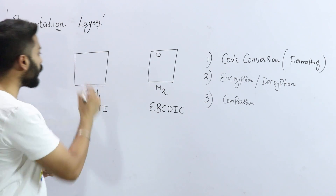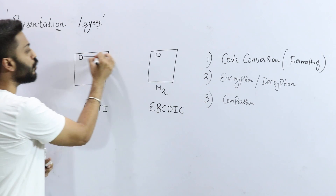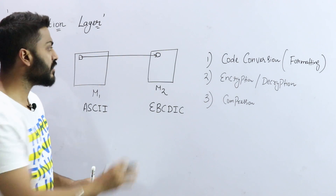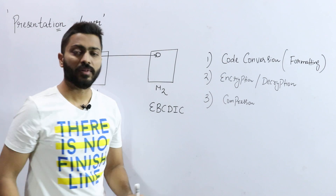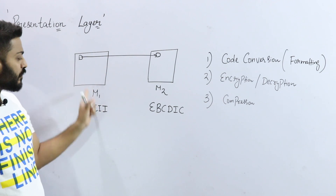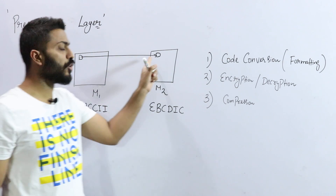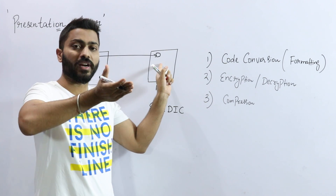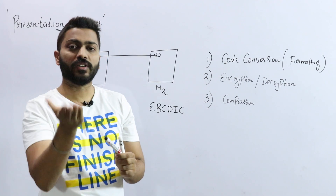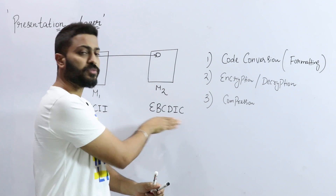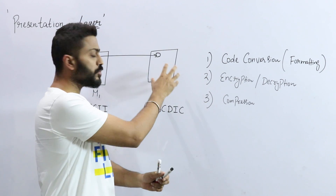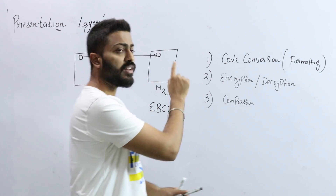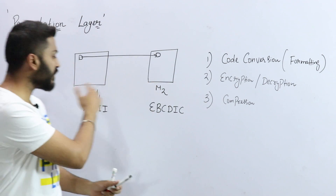Now, whenever we are sending the data to this machine, this particular application, it will send the data in a Sky format. So when the data comes in the Sky format, how do we convert that Sky format into AppCityCode, because this machine is understanding AppCityCode? For that, we use the Presentation layer.